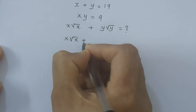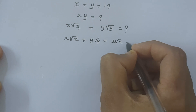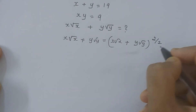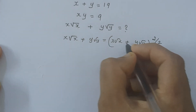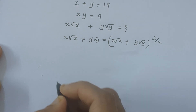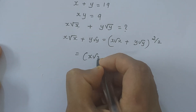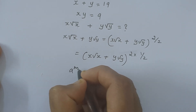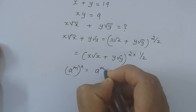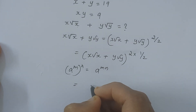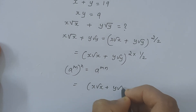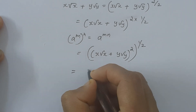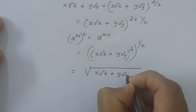So x√x plus y√y can be written as x√x plus y√y all raised to 2 by 2, because 2 by 2 is 1. Which is equal to x√x plus y√y all raised to 2, into 1 by 2. We know a raised to m, all raised to n, equals a raised to mn. So we can rewrite it as the square root of x√x plus y√y, all squared.